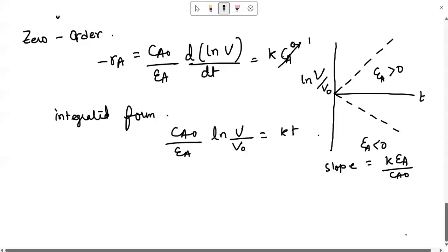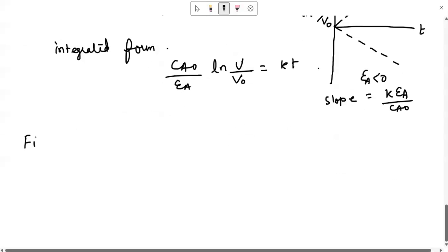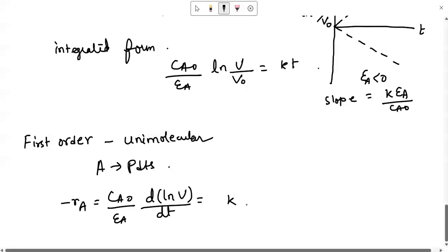Now coming for first order reaction. If it is a first order case, let us consider the unimolecular type. Unimolecular means A gives products. Then we can write minus rA equals to CA0 by epsilon A d(ln V)/dt equals to K multiplied by CA. Now this CA over here can be written as CA0(1-XA)/(1 + epsilon A XA) because simply nA by V. So you can write this expression.